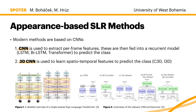Let's dive a bit deeper into the appearance-based stream of methods. The modern ones utilize convolutional neural networks. In the first case, plain CNNs are used to extract per-frame features, which are then fed into recurrent models — be it LSTMs, bi-directional LSTMs, or transformers — to predict the actual classes. We can see an example of this in figure one on the left, where a convolutional neural network extracts such features, the sequence is extended with positional encoding, and fed into a transformer.